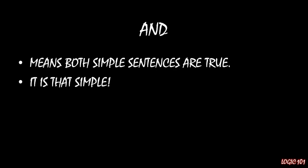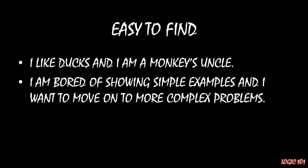For the most part, AND statements are easy to find because of that AND. Here are a couple of quick examples. 'I like ducks and I'm a monkey's uncle.' We see an AND there, so we know that the first sentence is true — I like ducks — and we also know the second sentence is true — I am a monkey's uncle. In the second example: 'I am bored of showing simple examples, and I want to move on to more complex problems.' Again, we see an AND, which means the first half — that I'm bored — is true, and that I want to move on to more complex problems is also true.